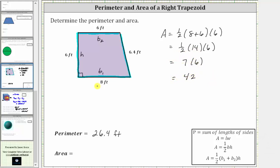Because the lengths are in feet, the area is in square feet or feet squared. The area of the trapezoid is 42 feet squared, which means exactly 42 square feet will fit inside the right trapezoid. I hope you found this helpful.